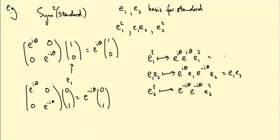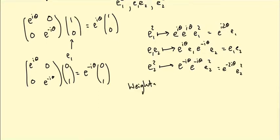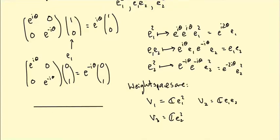Because each factor of e1 goes to e to the i theta e1. Similarly, e1 e2 is going to go to e to the i theta e1 e to the minus i theta e2 and that is the same as e1 e2 because the thetas cancel. And e2 squared goes to e to the minus i theta e to the minus i theta e2 squared. So that is, the weight space decomposition is as follows.